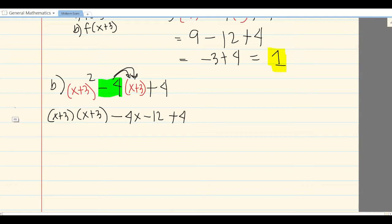Use the FOIL method: First, Outer, Inner, Last. First times first: x times x is x². Outer is 3x, Inner is 3x, Last is 9. All are plus. So x² plus 3x plus 3x is 6x plus 9, minus 4x minus 12, plus 4 is negative 8.